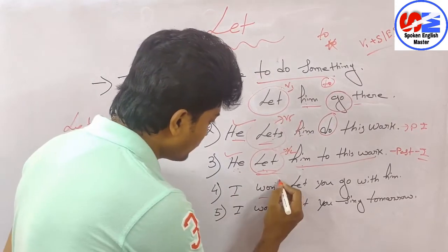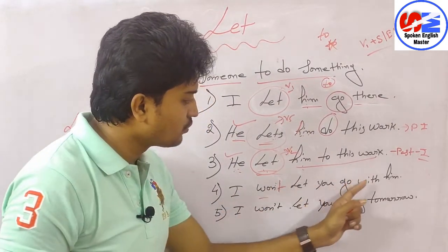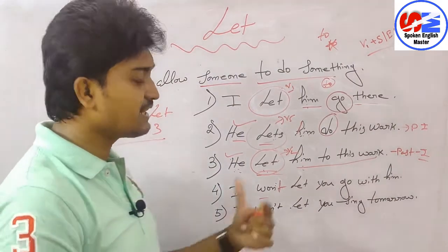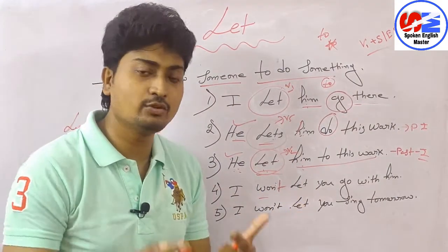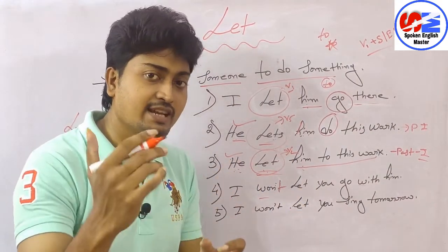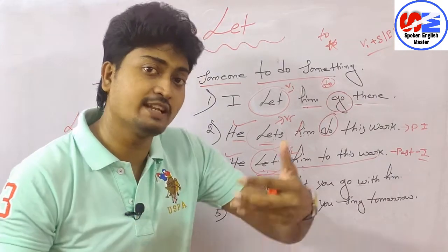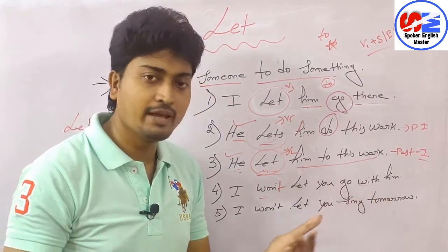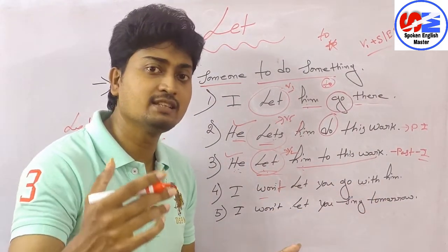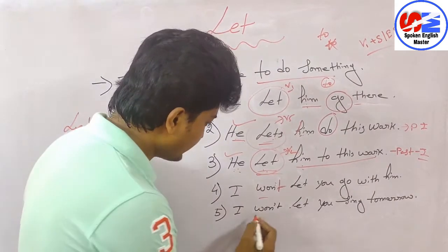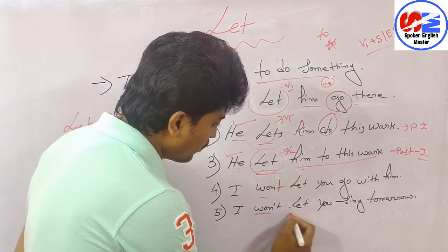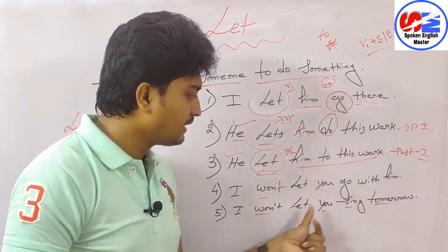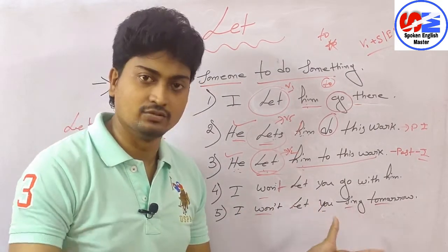'I won't let you go with him.' [Hindi: Main tumhe uske saath jaane nahi doonga.] This is a negative sentence. Compare: 'I will let you go with him' — [Hindi: Main tumhe uske saath jaane doonga.] And negative: 'I won't let you go with him.' Another example: 'I won't let you sing tomorrow.' [Hindi: Main tumhe kal gaane nahi doonga.]